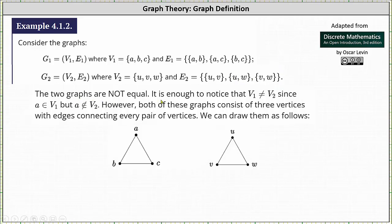The two graphs are not equal. It is enough to notice that the set V1 doesn't equal the set V2 since A is an element of V1, but A is not an element in V2. However, both of these graphs consist of three vertices with edges connecting every pair of vertices. We can draw them as follows.